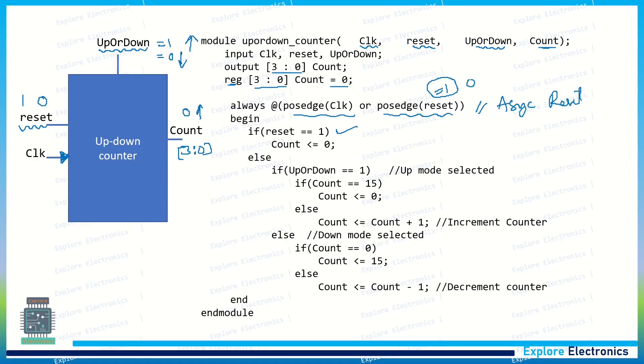And then comes, if reset is equal to 1, count will be 0. Else, we need to look for what is the up or down signal. If up or down signal is equal to 1, we need to make count equal to count plus 1. But before that, we need to check a condition: whether the counter value is 15. If it is 15, we need to bring back that counter to 0. If it is not 15, then we can allow the counter to count. So this is the logic for increment counter.